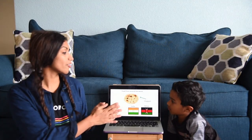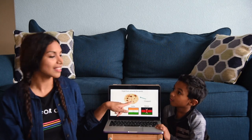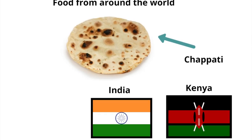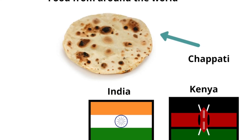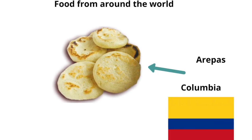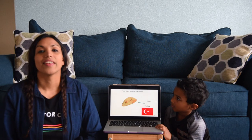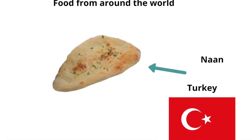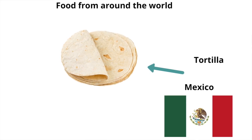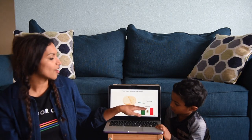That was clothing from around the world. Now let's look at food. This is chapati, or roti, from India — but people in East Africa and Kenya also eat chapati. Arepas are from Colombia, made with corn flour. Naan is from Turkey, something the teacher and Sahil eat all the time. Tortilla is another flatbread from Mexico — you can make tacos with it. Flatbreads are famous everywhere in the world.